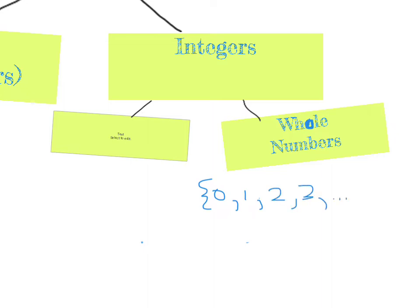So zero, one, two, three, four, et cetera. Positive twenty is in the whole numbers. Negative two is not a whole number — it's only zero and the positive integers.